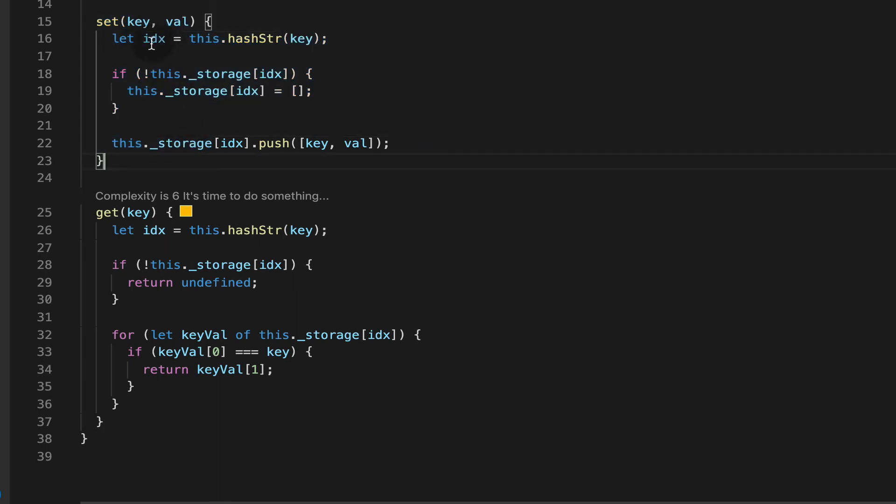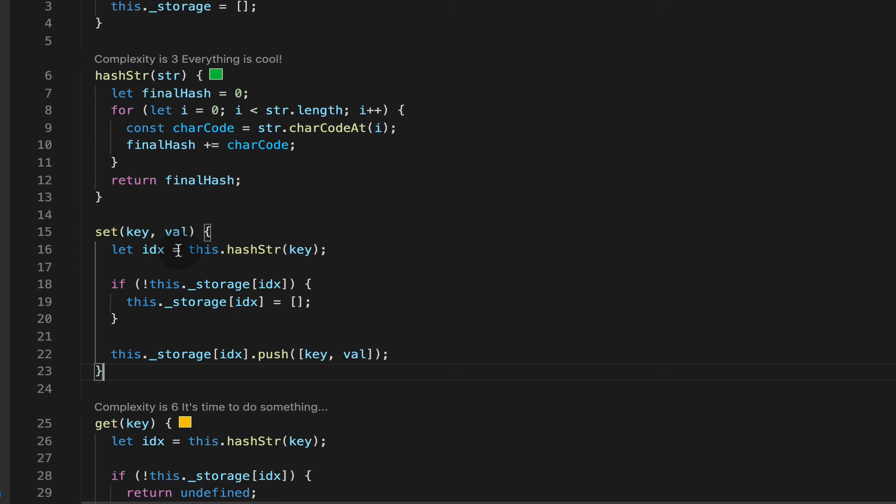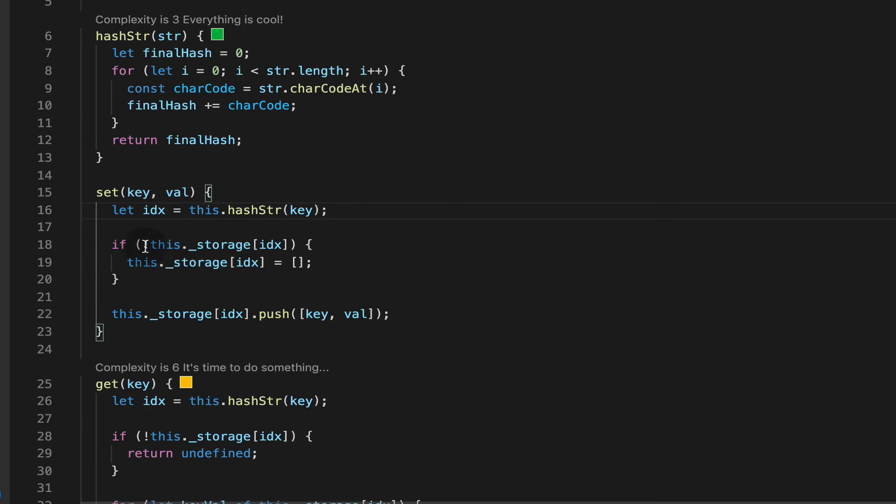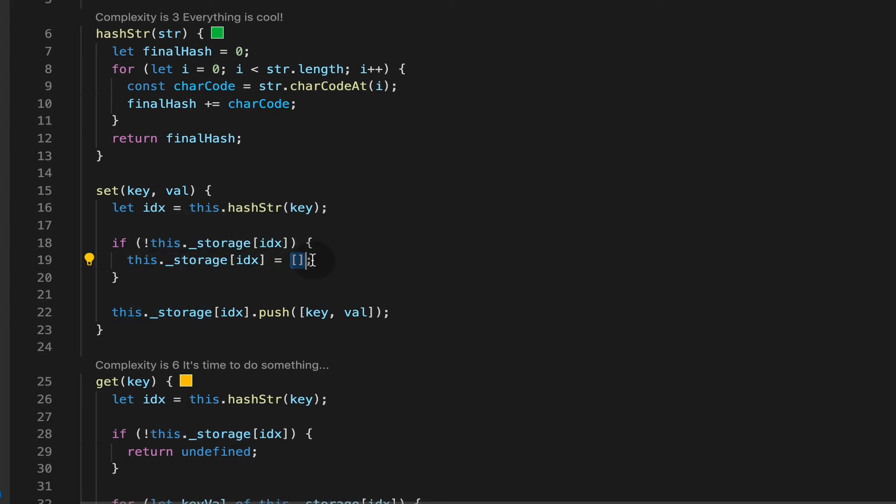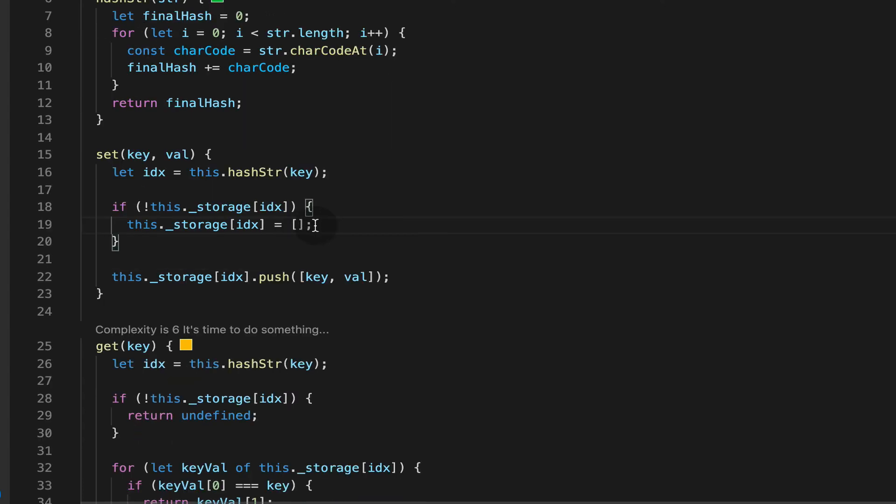And the interesting parts are these set and get methods. So to set a key and a value we calculate an index using the hashing function. So we pass the hashing function the key and we get an index back. Then we check if the index exists within our internal storage array yet. If it does not then we initialize and set ourselves up with an array to store multiple values in the event of a collision. And then we push an array of the key and value as pairs at that location.